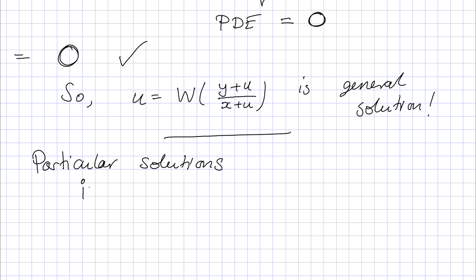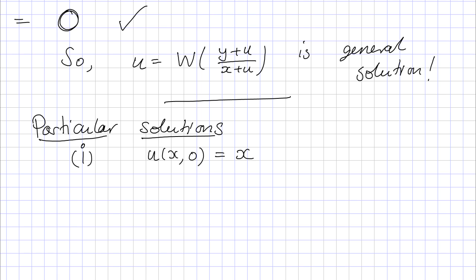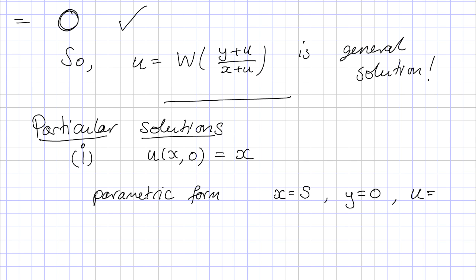Now for the particular solutions. The first case: we'd like the solution to match the curve u(x,0) = x. The first thing to do when given an initial condition like this is to turn it into parametric form. The simplest way is to define a parameter s and say x = s. We're told y = 0 on this curve and u = x, so u = s as well.